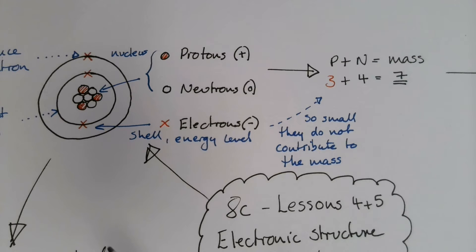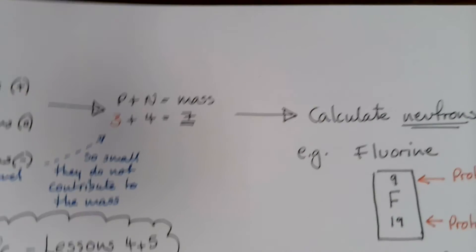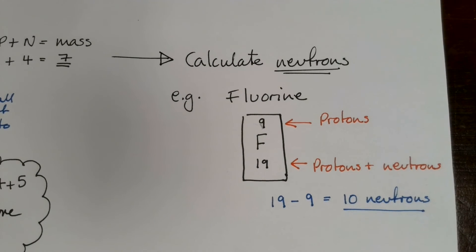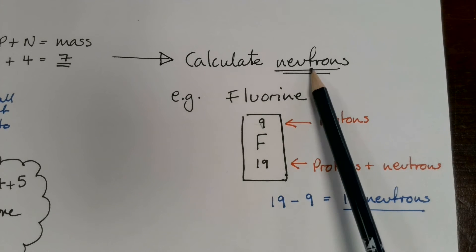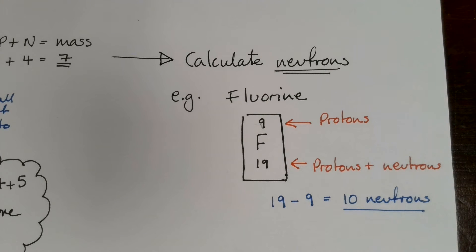We can also look at something else with the protons and the neutrons, because in the periodic table we have information about all of the different elements. So I've used fluorine as an example. And we can calculate the number of neutrons that every atom has just by looking at the number of protons, which is sometimes called the atomic number, and in fluorine's case it's nine.